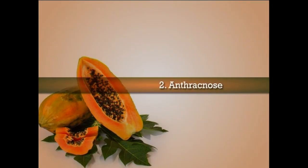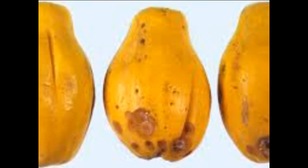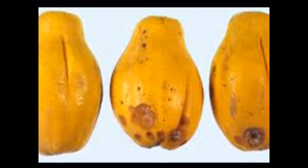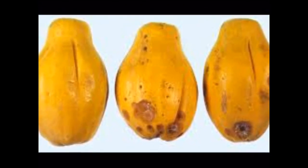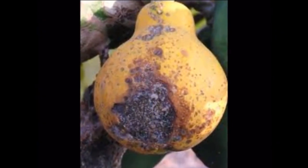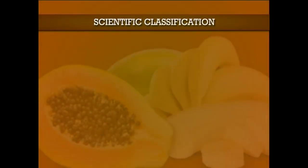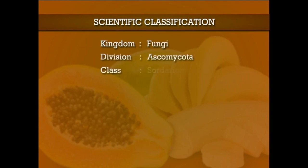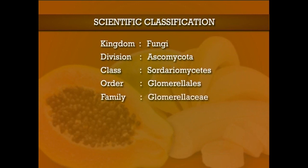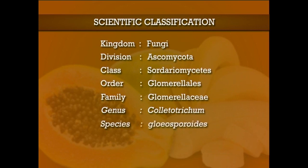The next disease is anthracnose. Anthracnose causes considerable losses and is very common in all papaya-growing areas. The pathogen appears as small, irregular-shaped, water-soaked spots on leaves, which eventually turn brown. Scientific classification: Kingdom Fungi, division Ascomycota, class Sordariomycetes, order Glomerellales, family Glomerellaceae, genus Colletotrichum, species gloeosporioides.